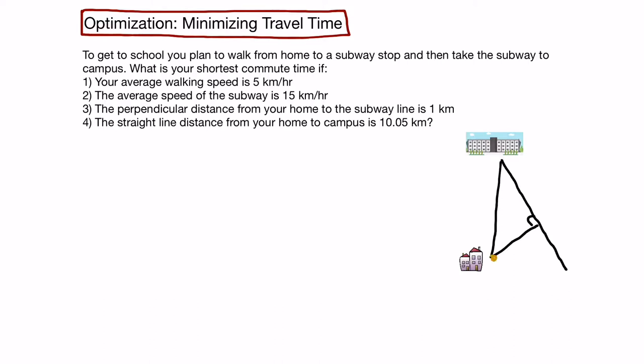We'll call this point H for home, this point C for campus, and this point P for the perpendicular distance from home to the subway line. The perpendicular distance HP is 1 km, and the straight line distance from home to campus, HC, is 10.05 km.